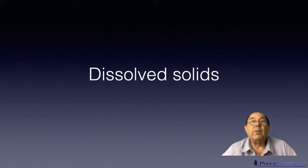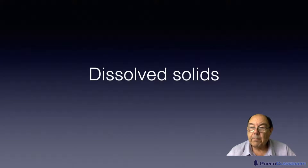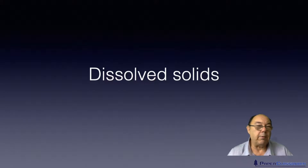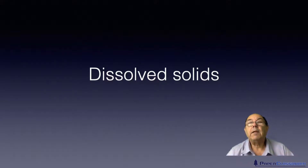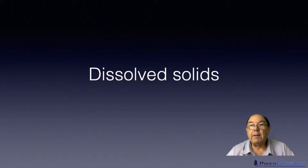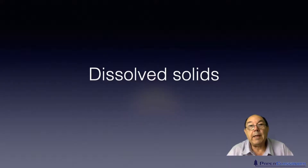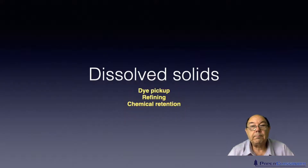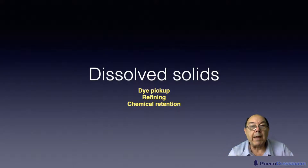Then we have dissolved solids, which could almost be a collective name for the three previous things we've talked about — water hardness, pH, and iron and manganese. Dissolved solids can affect refining and wet end chemistry, including things like dye uptake onto fibres and how retention aids perform. So dissolved solids will affect pickup of dyes, refining, and chemical retention.